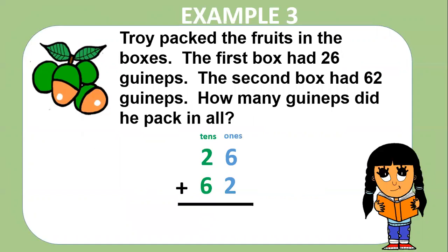Example three. Troy packed the fruits in the boxes. The first box had 26 guavas. The second box had 62 guavas. How many guavas did he pack in all? Remember the steps. Step one, add the ones. Step two, add the tens. Let's circle 26 and 62. Six plus two equals eight. Two plus six equals eight. So the sum is 88.